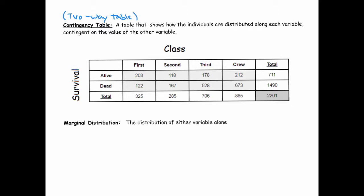Now in a two-way table, we get to see how the individuals are distributed along each variable contingent on the values of the other variables. For instance, we see not only that there are 325 people who are on the Titanic in first class, but we can see how those people break up into those who survived and those who passed away.